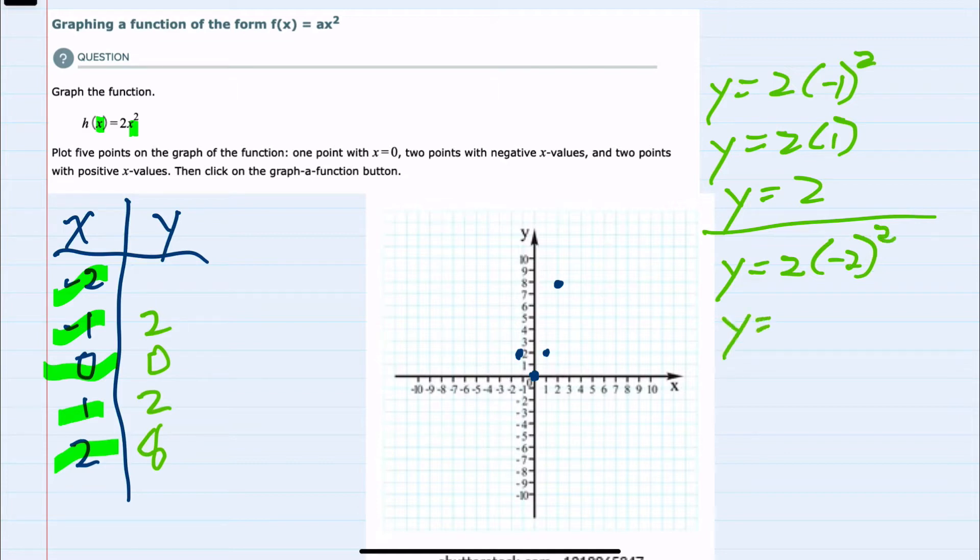And again, doing the square first, negative 2 squared is 4, so 2 times 4 would give us a y value of 8, so that last coordinate is negative 2, 8, which is here.